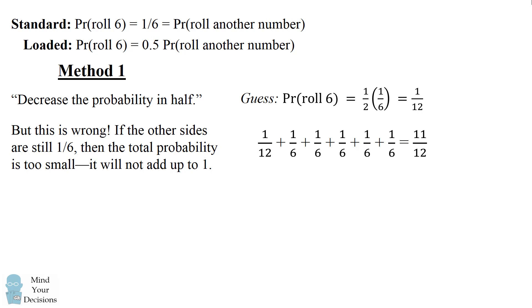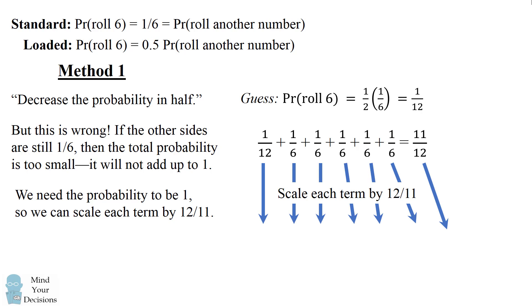But no worries, there's a way to fix this. Since we need the probability to be 1, we can scale each term by 12 over 11. This is so that we have 11 over 12 being equal to 1 once we scale it. And if we scale all the other terms by the same factor, we'll get the correct probability.